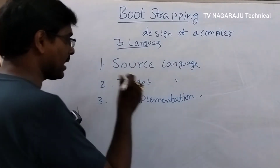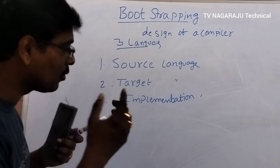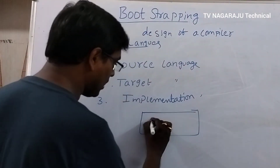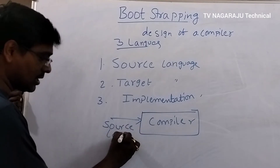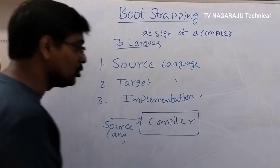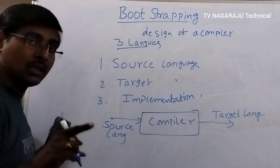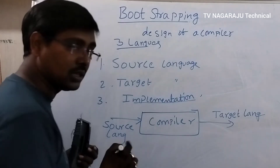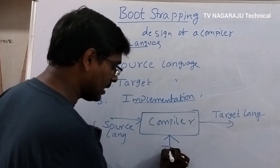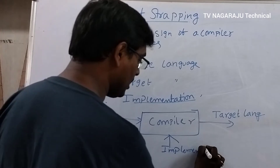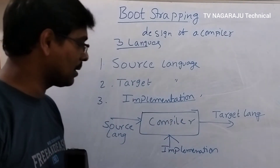Any compiler is characterized by using these three languages. Whatever input we are providing to the compiler is in terms of source language. After performing compilation, it produces the output in target language. The implementation language is the language that is used to design the compiler — by using this language we can implement the compiler.